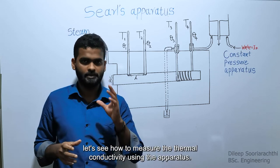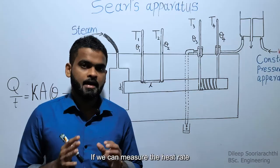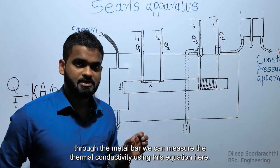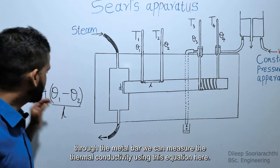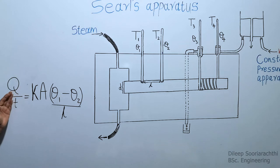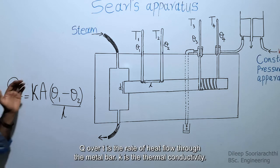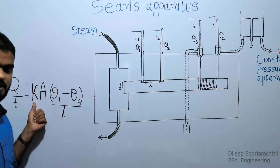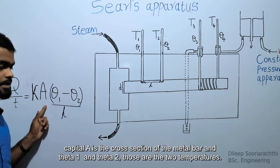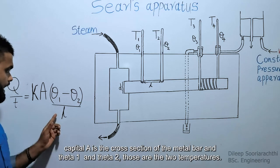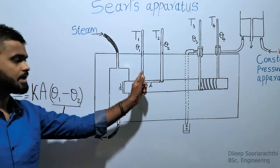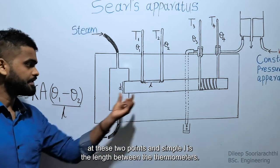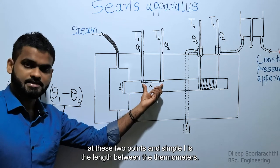If we can measure the heat flow rate through the metal bar, we can measure the thermal conductivity using this equation. Q over T is the rate of heat flow through the metal bar. K is the thermal conductivity. Capital A is the cross-section of the metal bar. Theta 1 and Theta 2 are the two temperatures at these two points, and simple L is the length between the thermometers.